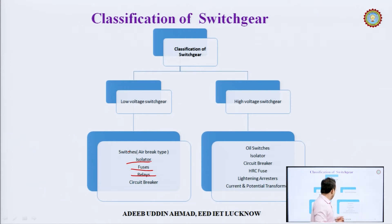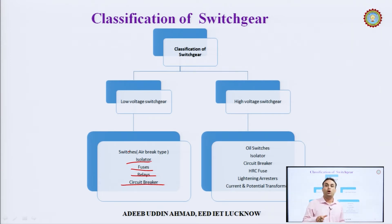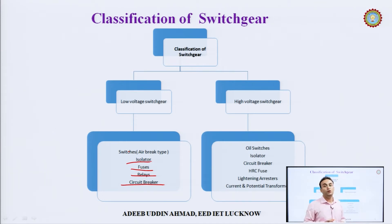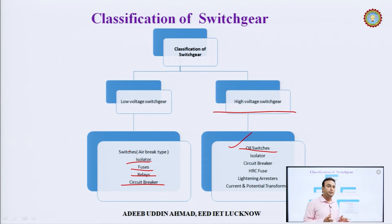The circuit breaker receives the signal from the relay and disconnects the faulty section from the healthy section. A circuit breaker is also a switch that can be operated manually or automatically. It automatically operates when there is a fault, and its fundamental duty is to eliminate the faulty section from the healthy section.